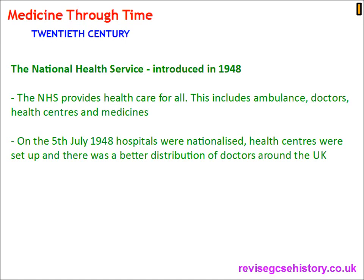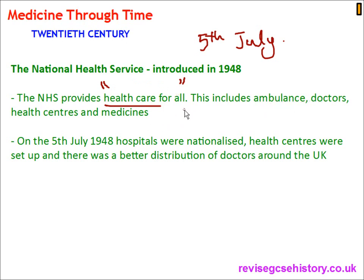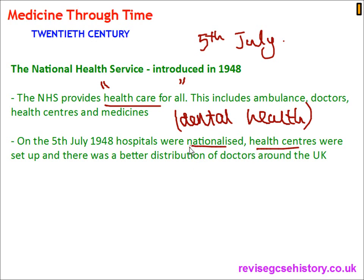The National Health Service was introduced on the 5th of July 1948. It provides healthcare for all and is a government-funded service, covering ambulances, doctors, health centres, medicines, and at one time even dental health — though today people have to pay for dental care. On that date hospitals were nationalised, health centres were set up, there was a better distribution of doctors around the UK, and doctors were given a fixed salary.